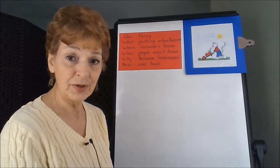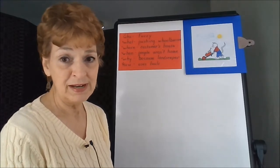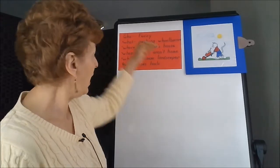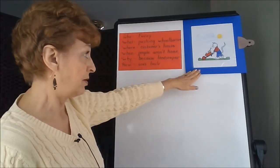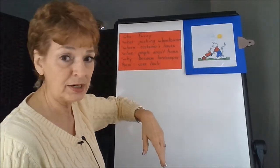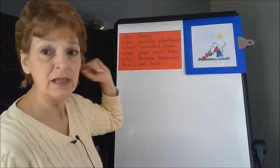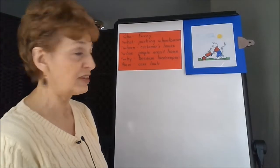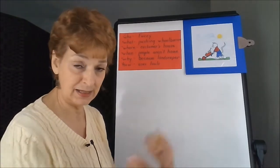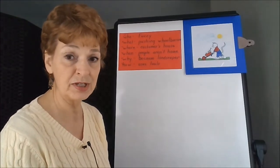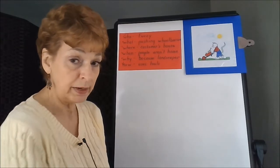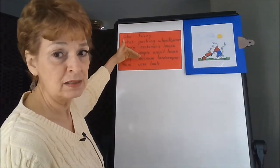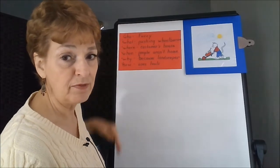For your preschooler, they will probably not be able to write at all, but you can scribe for them. When you prompt your child — 'Who's in the picture?' — and they say 'Fuzzy,' you write it down. And perhaps, 'What's Fuzzy doing?' you might extend the conversation, and your preschooler might say 'pushing a wheelbarrow,' so you write that down — whatever's reasonable that you scribe for them.